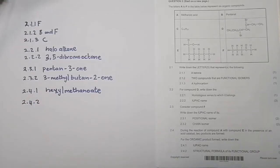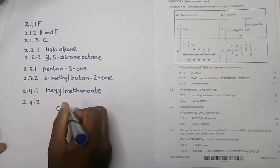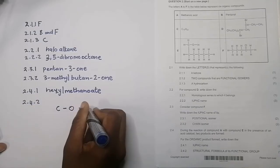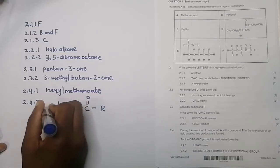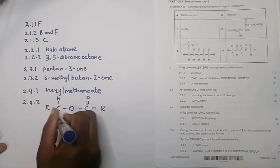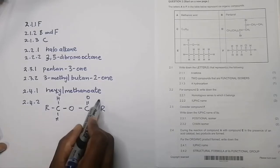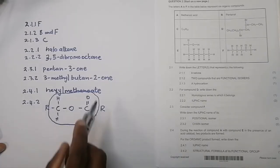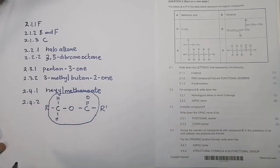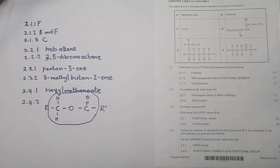They say write down the structural formula of its functional group. For esters, the functional group has that O in line with your carbons and also a double bond O. You can put an R and R' on either side. The functional group of esters is that entire group. You can write it with or without the R and R'. If you draw it within a compound, please remember to always circle it.